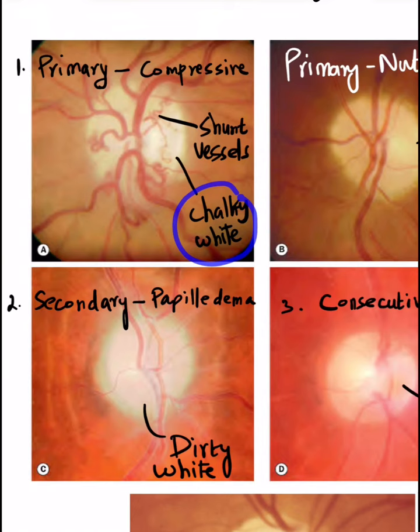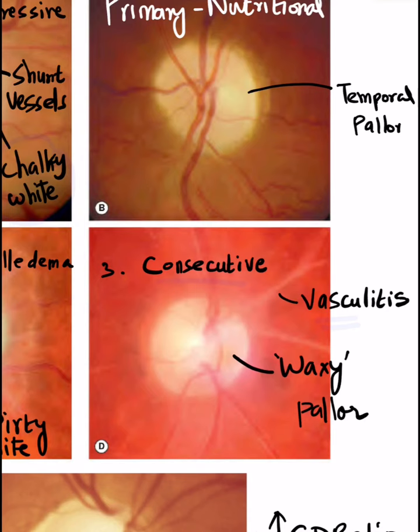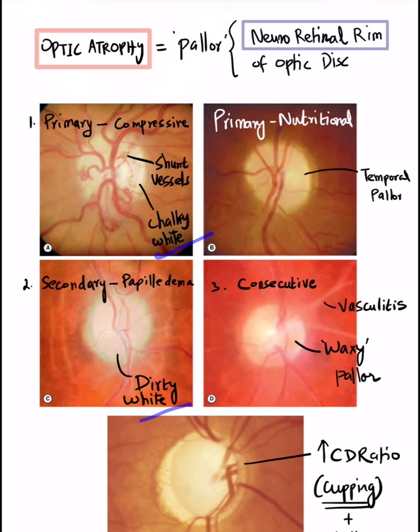In consecutive optic atrophy, which is caused by vasculitis in this case, we can expect a waxy pallor. So please understand the chalky white pallor, dirty white pallor, and waxy pallor in primary, secondary, and consecutive optic atrophies respectively.